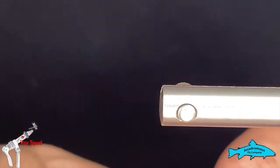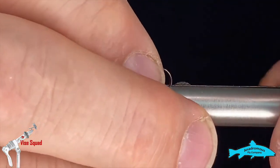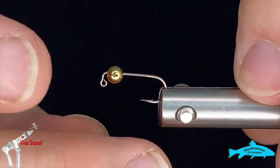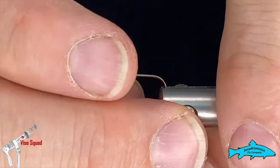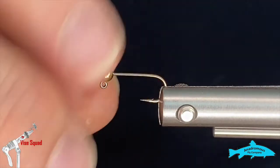That was a horrible joke. We will start with a size 10, 90-degree, two extra heavy jig hook from Mustad, and we're going to put a 5/32 gold tungsten bead on there.